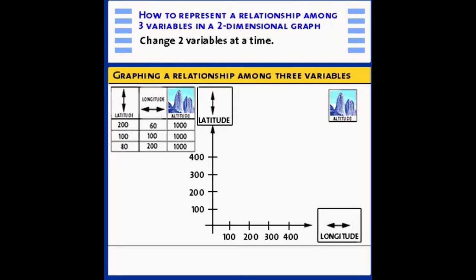On the vertical axis, we will measure the distance north or south, or the latitude. On the horizontal axis, we'll measure the distance east and west, or the longitude. And altitude we'll represent in a special way in the graph, and I'll show you in just a moment.